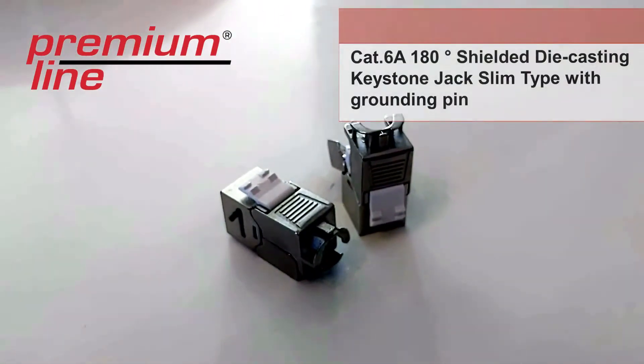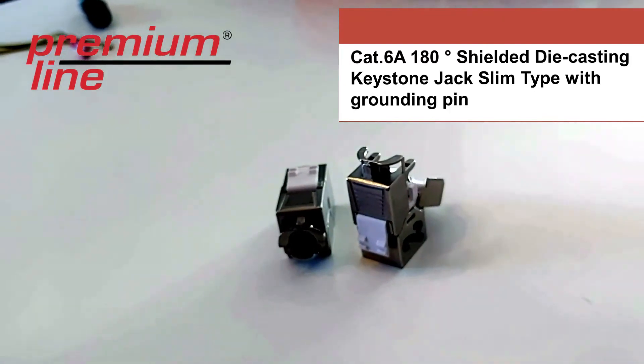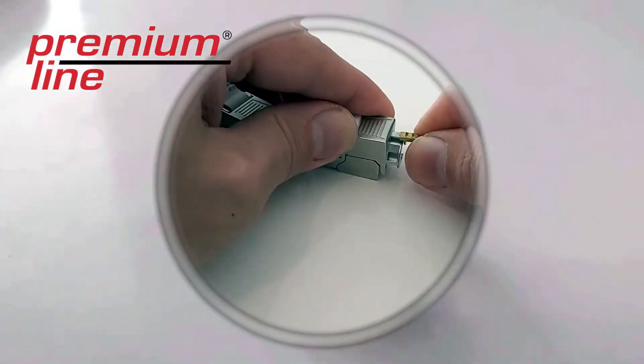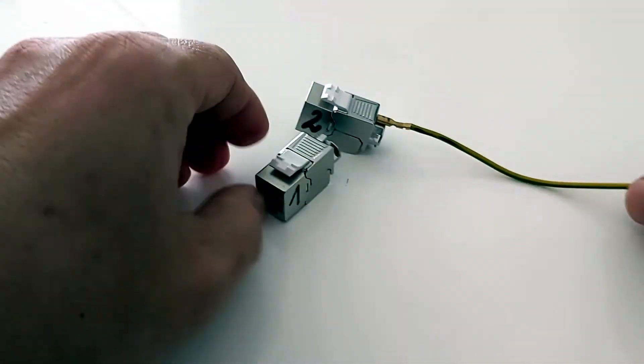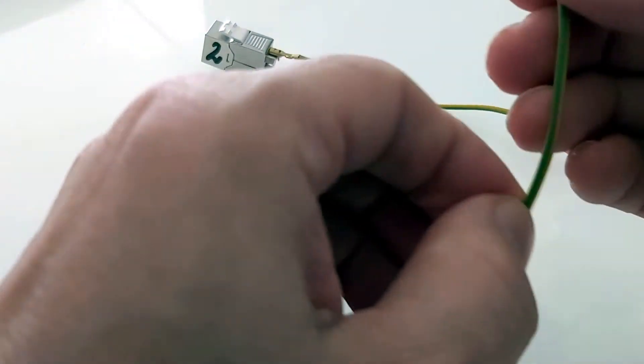Premium Line Cat.6A 180-degree shielded die-casting keystone jack slim type with grounding pin is at your attention. Thanks to the self-clamping design, the installation is carried out without additional tools and it is in accordance with the T568A and B standards.